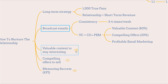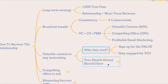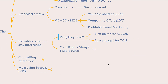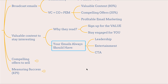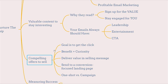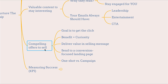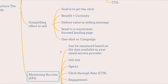Meaning 80% valuable content plus 20% compelling offers results in very profitable email marketing. Another thing to keep in mind when nurturing relationships is why they read — because they signed up for the value and stay to engage with you. Therefore your email should always have leadership, entertainment, and a call to action. When selling your services, you want a compelling offer. The goal is to get the click with benefit and curiosity factors, deliver value in the selling message, and send them to a conversion-focused landing page.